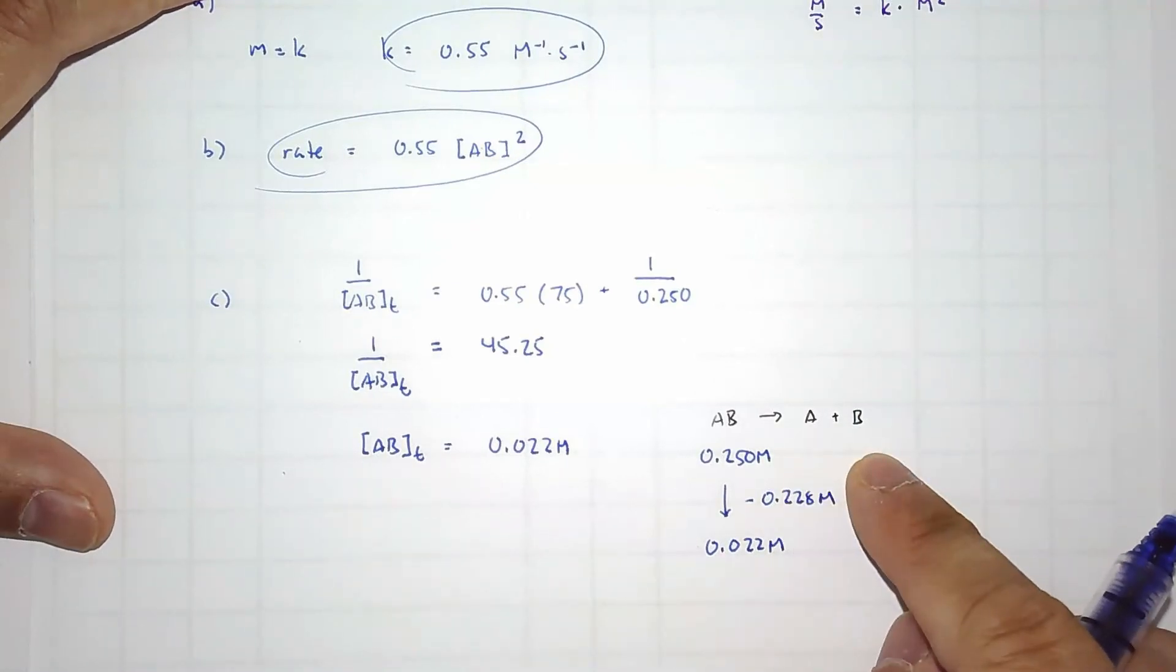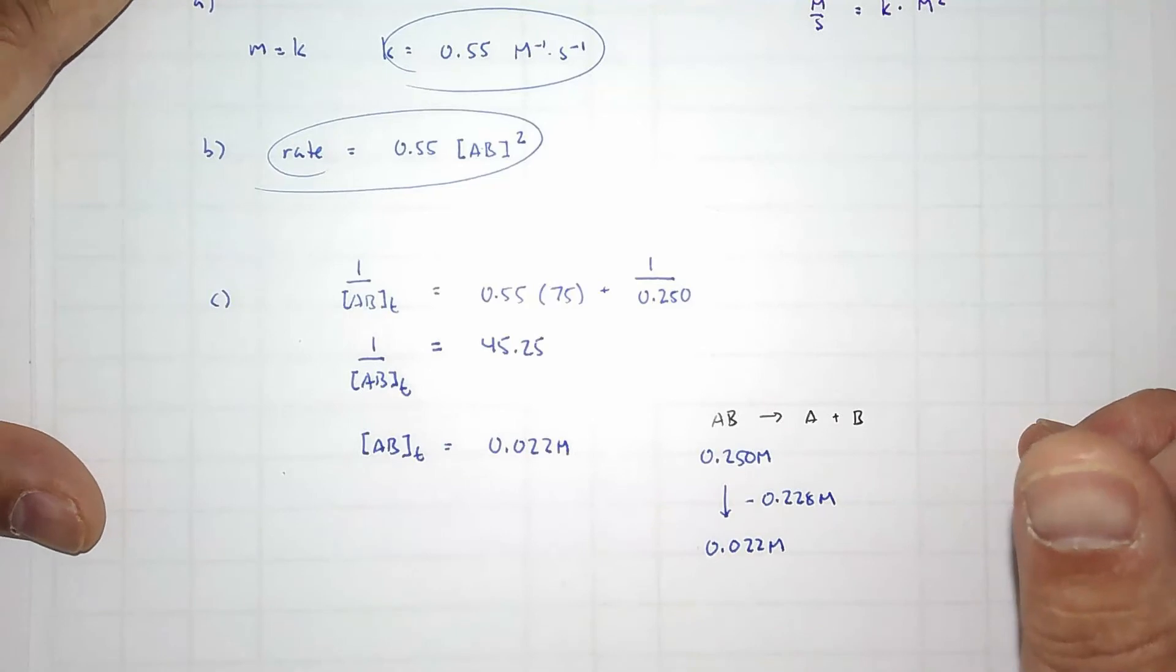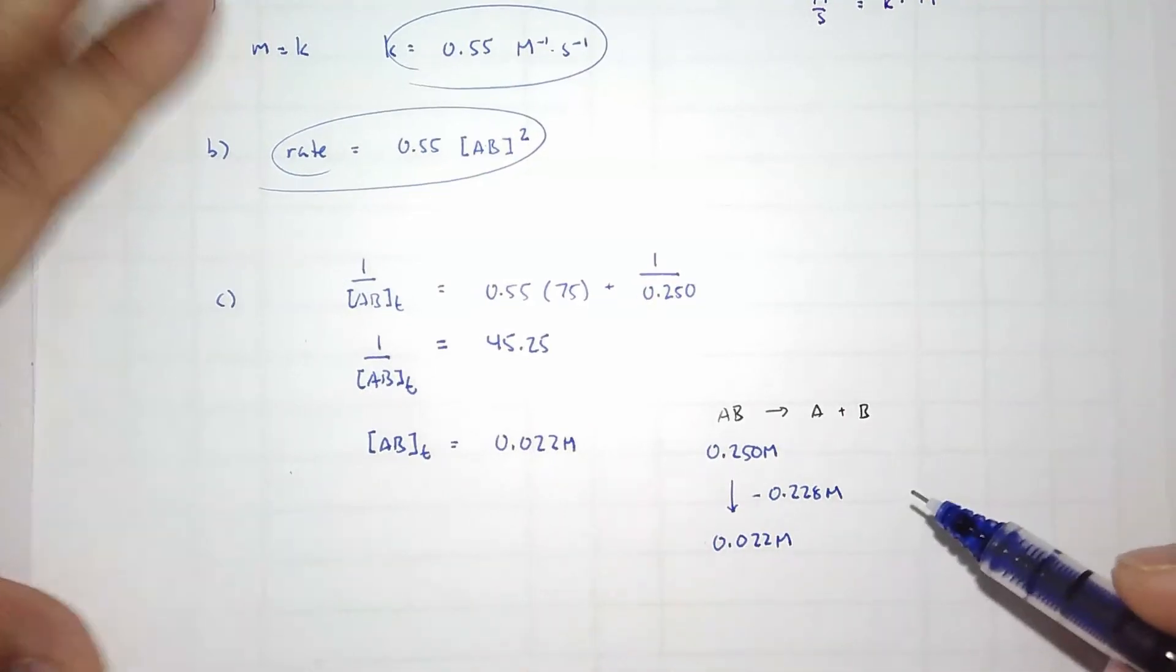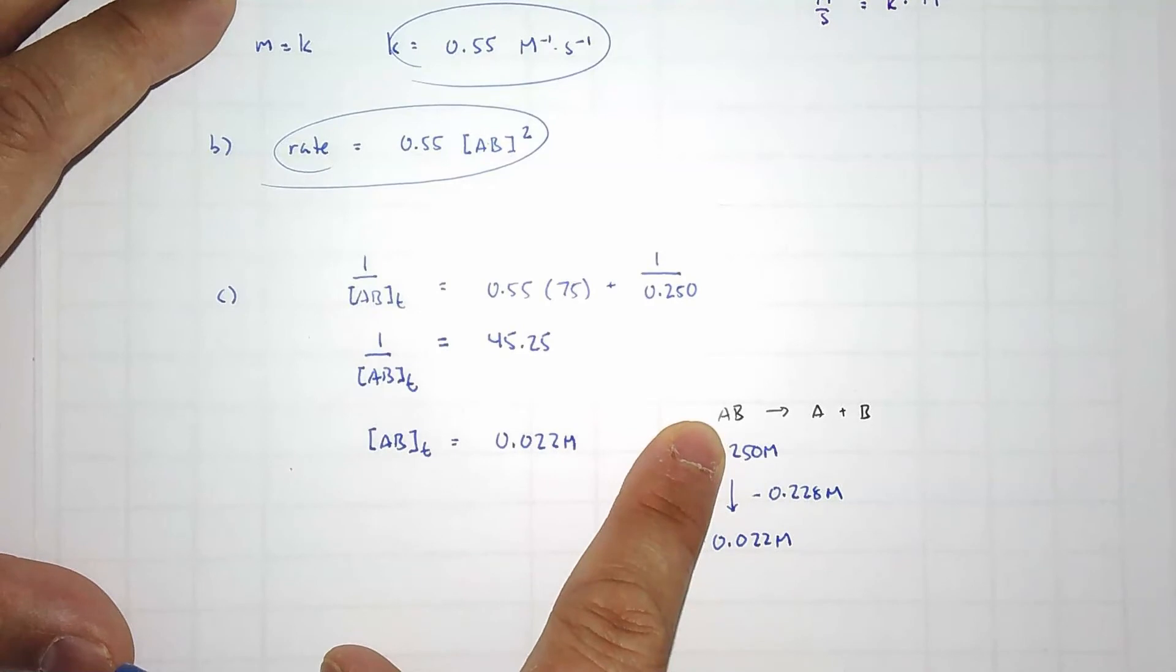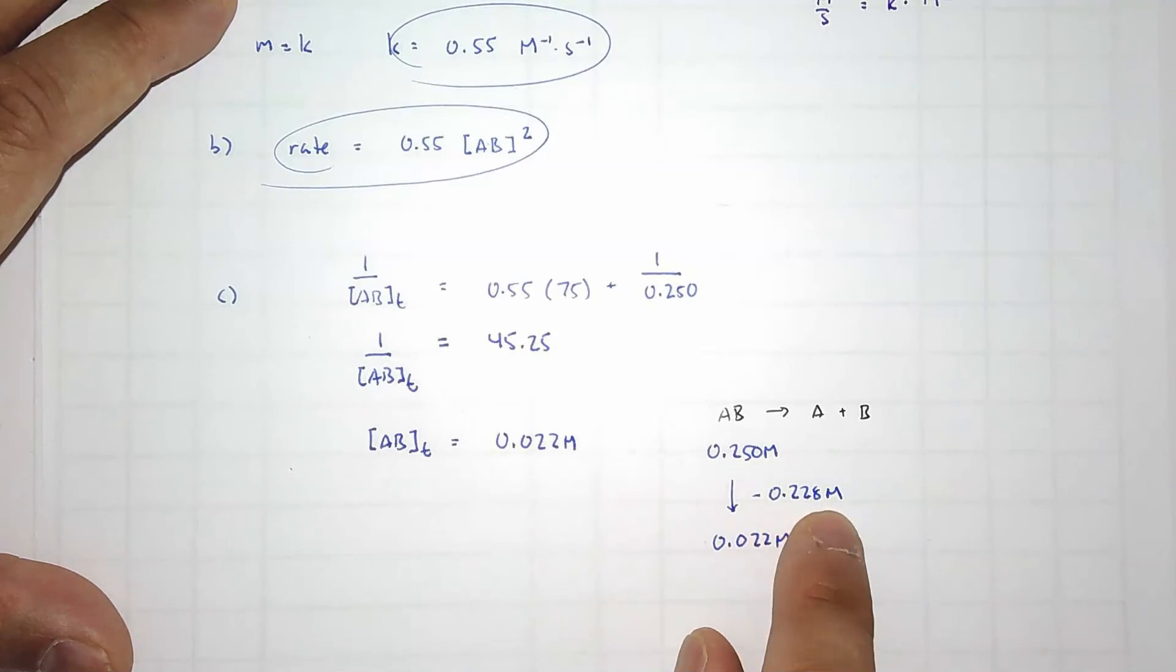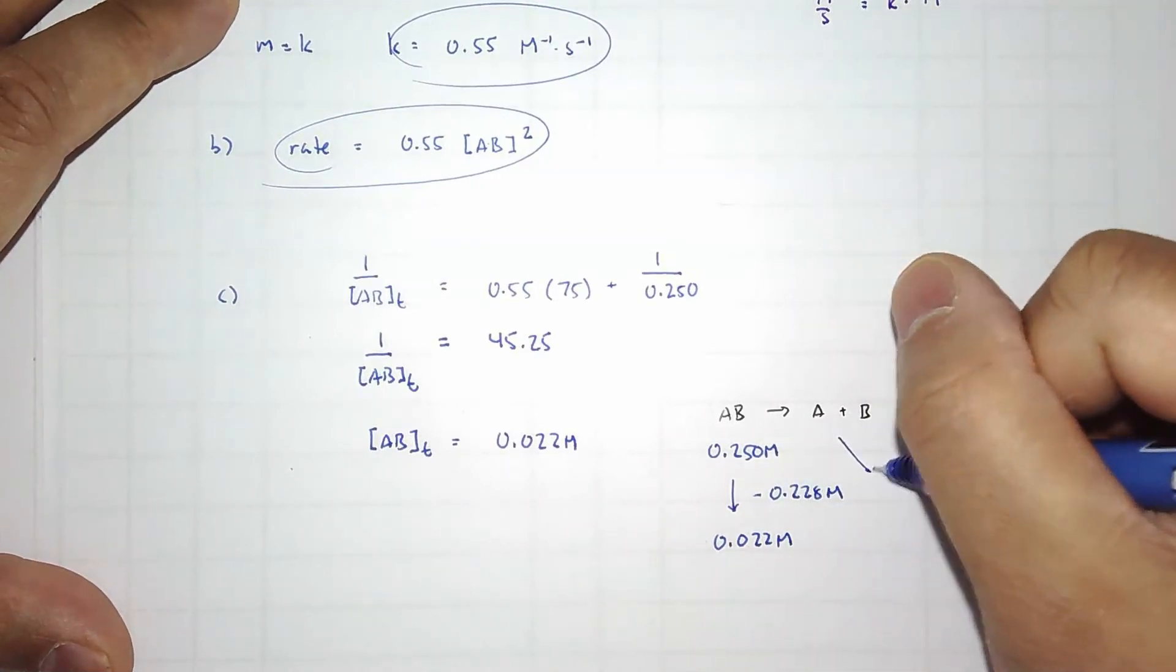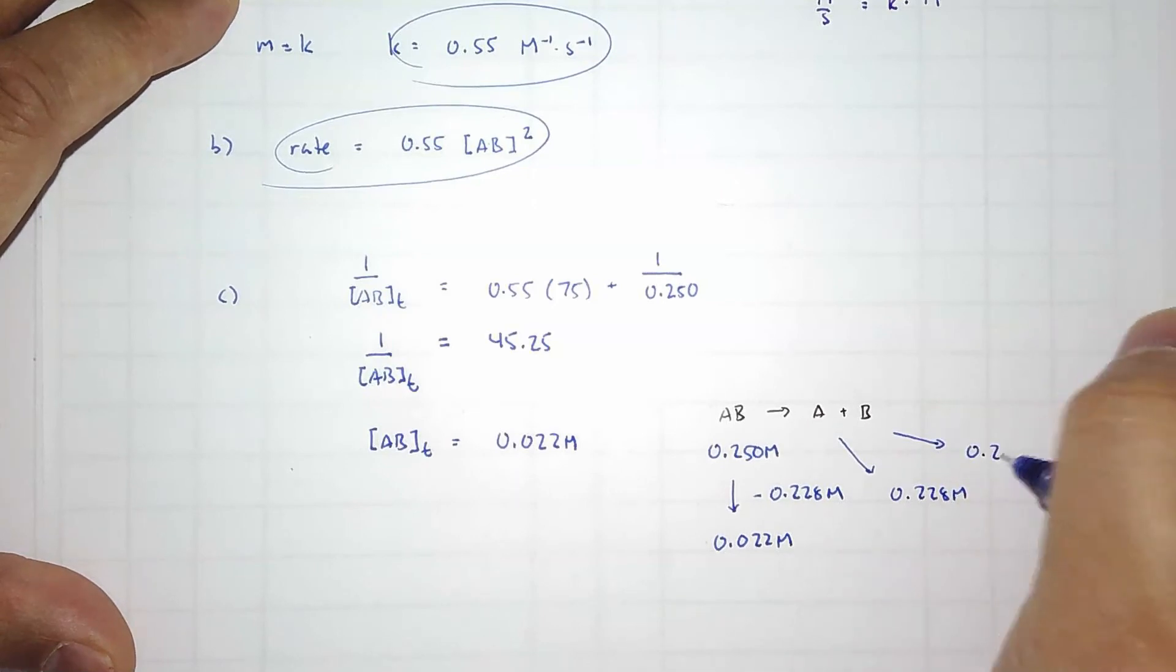So if I, for instance, lose 10 molecules of AB, or if I consume 10 molecules of AB, wouldn't I gain 10 molecules of each? So if I'm losing 0.228 molar of AB, wouldn't it make sense that I'm gaining that much for A and B also? 0.228 molar. So A is now 0.228 molar, and B is 0.228 molar as well.